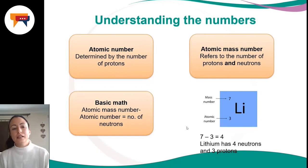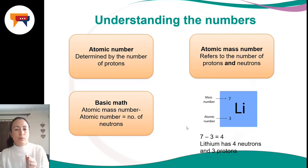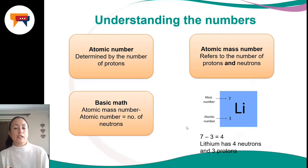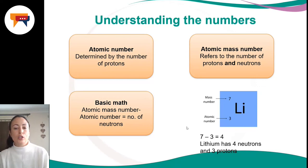If you take the number of protons and neutrons together and minus the protons, you're left with just the neutrons. For example, in lithium, the mass number is seven and the atomic number is three. Three represents the number of protons, and seven represents the number of protons and neutrons. So seven minus three leaves four — lithium has four neutrons and three protons, as shown by the atomic number.